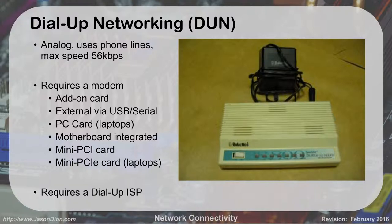When we do dial-up, we use a phone line. It's analog, so it makes noises. The maximum speed you can get, because of the way phone lines are built and the analog connection, is 56 kilobits per second. That is really, really slow. You don't want to be operating at that. To do this, you have to have a modem. This can be either built in, done as an expansion card, or done externally through USB or serial, like this old serial modem.